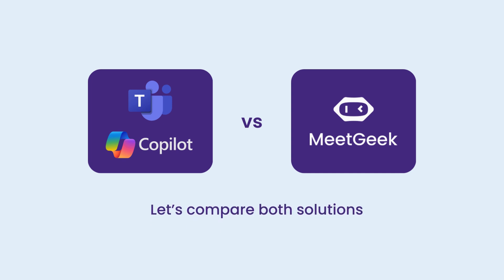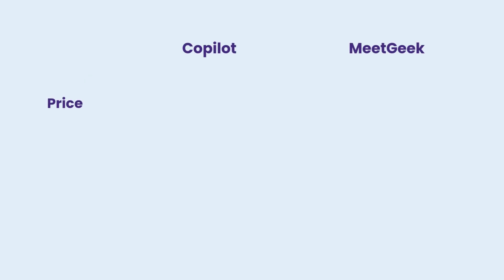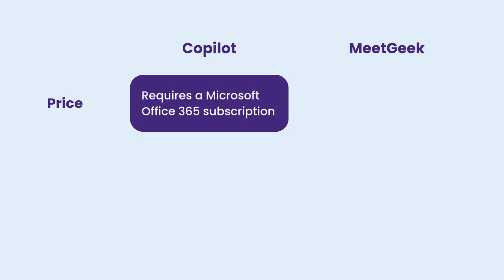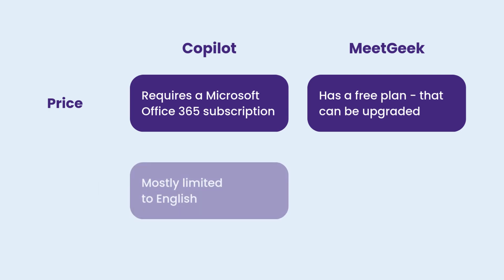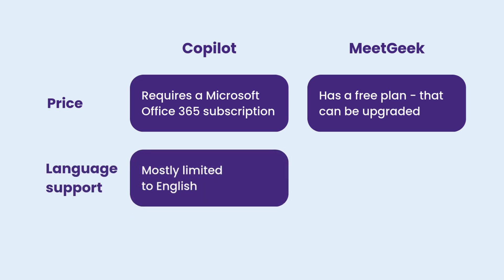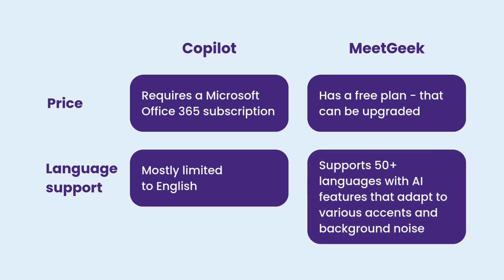Let's compare Microsoft Teams Co-Pilot and MeetGeek side-by-side. Starting with the price, Co-Pilot requires a Microsoft Office 365 subscription, while MeetGeek has a free plan. Co-Pilot's language support is mostly limited to English, whereas MeetGeek supports over 50 languages, with AI features that adapt to various accents and noises.